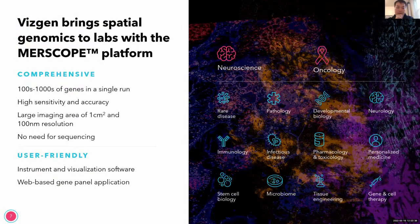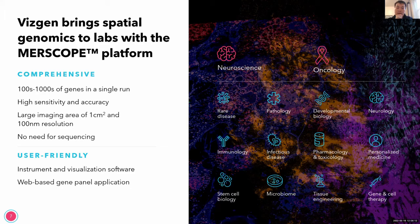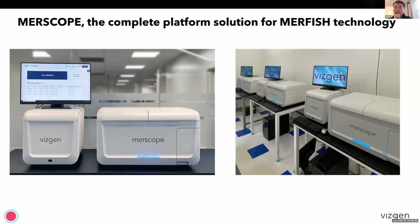Vizgen was actually the first to truly launch a spatially resolved single-cell transcriptomic profiling platform to the market, called MERSCOPE. This is our imaging-based platform where hundreds to thousands of genes can be imaged in a single run with very high sensitivity and accuracy. The platform can image very large tissue areas up to one square centimeter with down to 100 nanometer resolution, with no need for sequencing. This is an end-to-end solution where chemistry, the data acquisition instrument, and visualization software all come together.